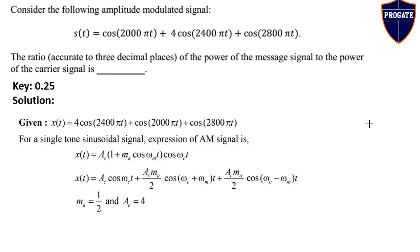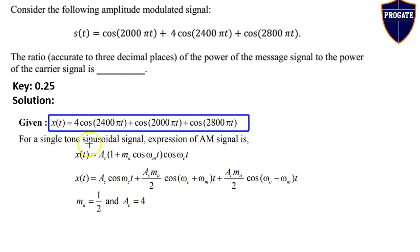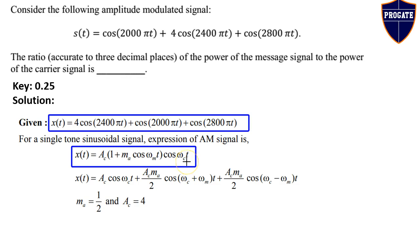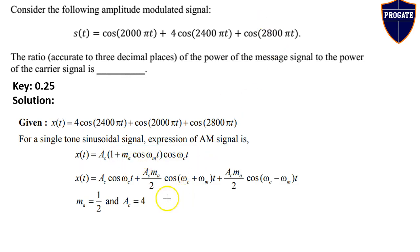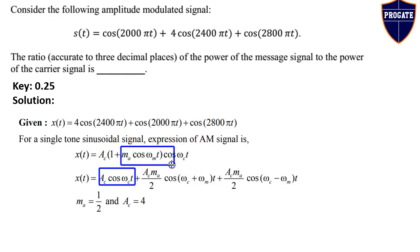Coming to the solution: the given signal is compared with the standard AM expression X(t) = Ac · [1 + MA · cos(ωm·t)] · cos(ωc·t). Performing term-by-term multiplication, we get Ac·cos(ωc·t) as the first term, and Ac·MA·cos(ωm·t)·cos(ωc·t) as the second term.